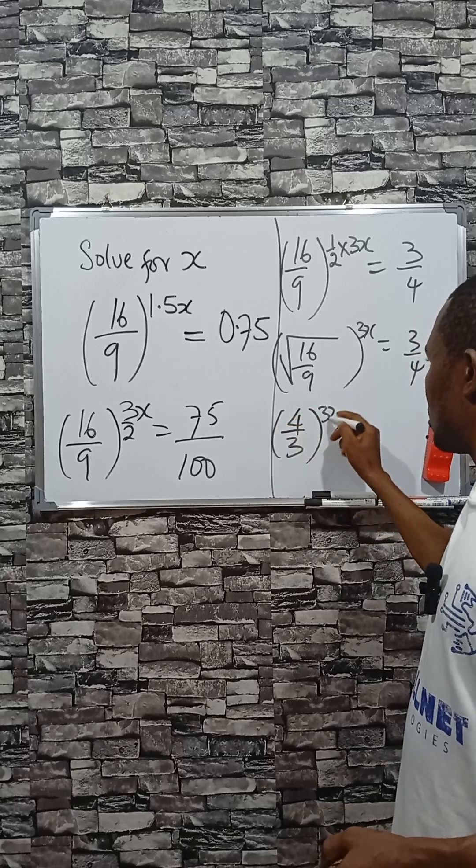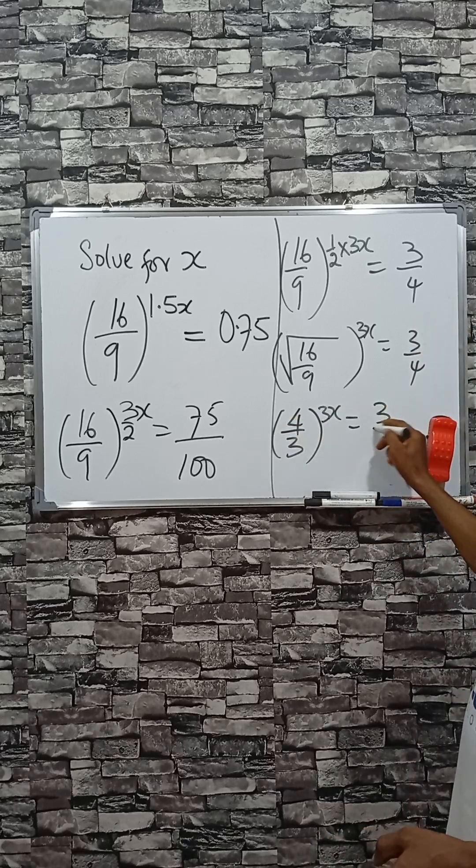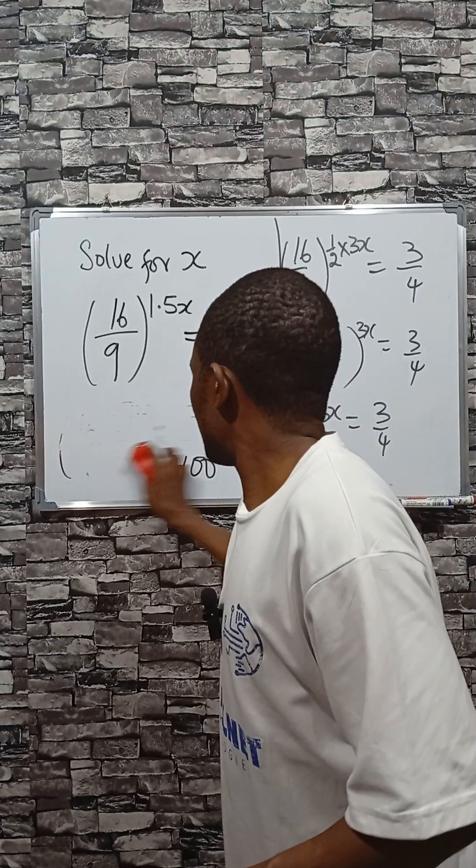Then raised to the power of 3x equals 3 divided by 4. I want to do something here.